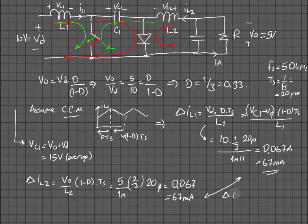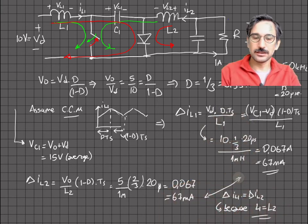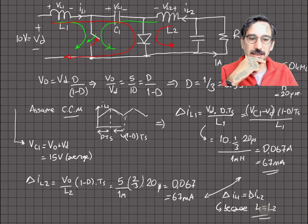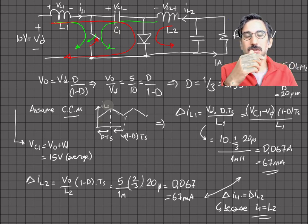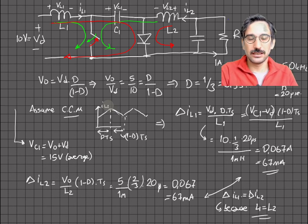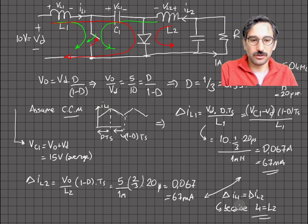So ΔIL1 equals ΔIL2. That is the key point — if you choose the same inductance values, both inductors have the same amount of ripple and the same current, which is why we can combine them into a single core using mutual inductance.